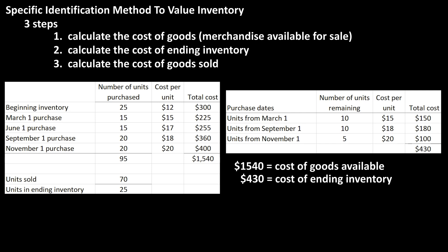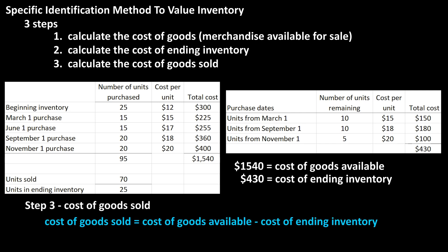Now we can do the third step: calculate the cost of goods sold. The formula is cost of goods sold equals the cost of goods available for sale minus the cost of ending inventory. So we have $1,540 minus $430, which equals $1,110 as the cost of goods sold.